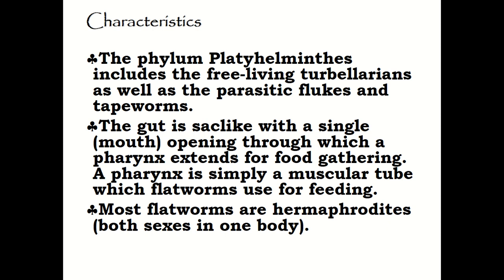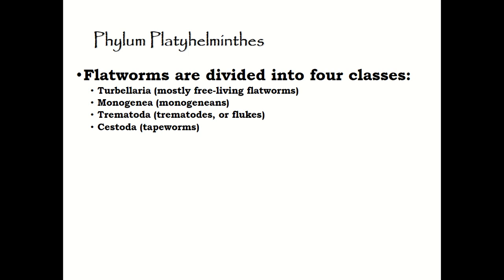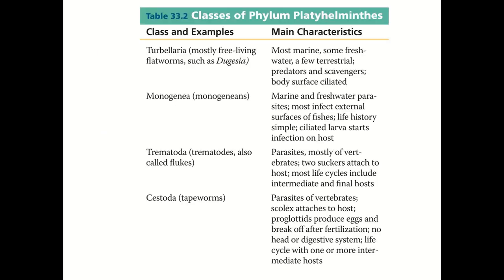Phylum Platyhelminthes includes free-living turbellarians as well as parasitic flukes and tapeworms. They have a gut that looks like a sac with a single mouth opening through which a pharynx extends for food gathering — the pharynx is a muscular tube flatworms use for feeding. Most flatworms are hermaphrodites, meaning they have both sexes in one body. Flatworms can be divided into four classes: Turbellaria, Monogenea, Trematoda, and Cestoda.